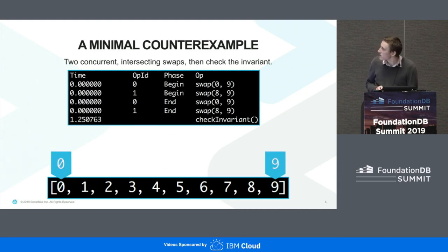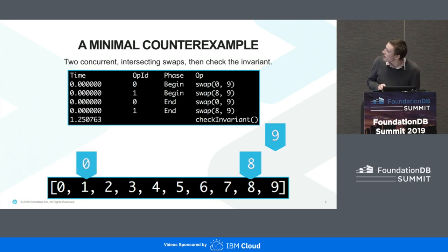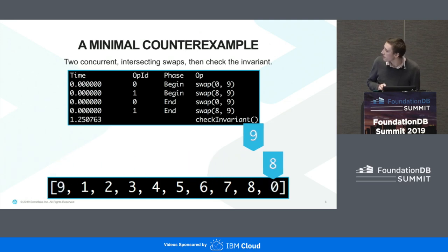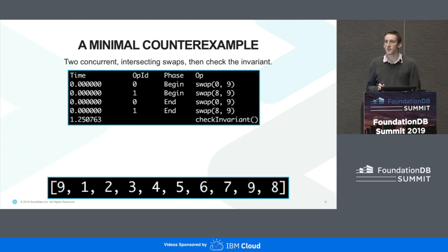So this is what happens. The first operation reads zero and nine, then we're reading eight and nine, then we're writing zero and nine, and then writing eight and nine. What you see is that nine now appears twice. That's our minimal counter example.